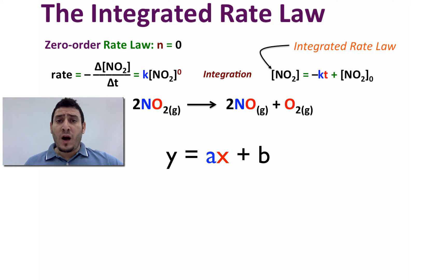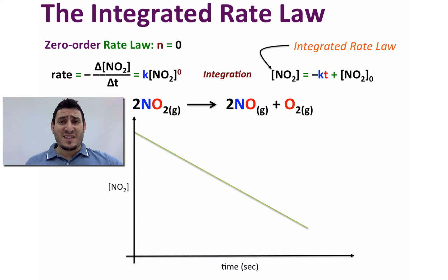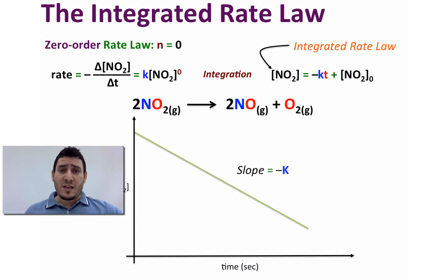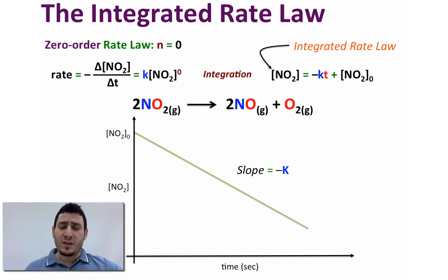This equation is in the form of y = ax + b. So if we draw the curve of concentration versus time, we get a straight descending line where the slope equals −k, and the y-intercept gives us the initial concentration of NO₂.